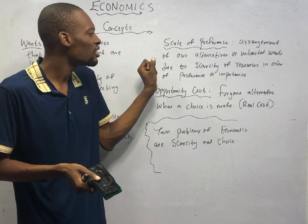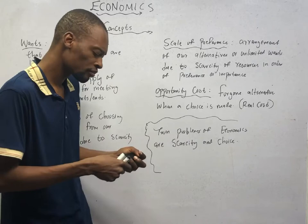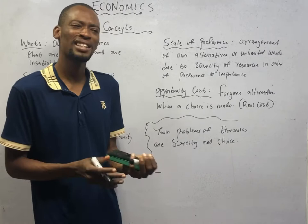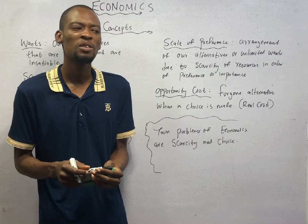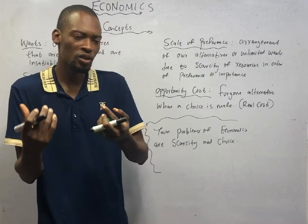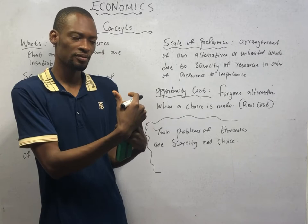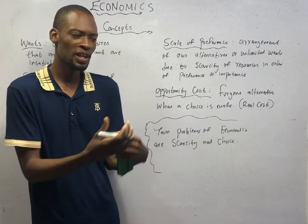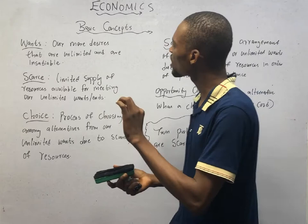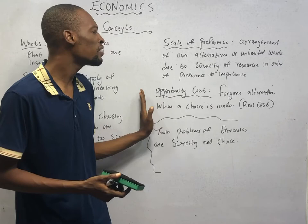Scale of preference is the arrangement of our alternatives or unlimited wants due to scarcity of resources in order of preference or importance. As a household you have to reason — this is called rationalization. You may want a car, food, a phone, or to open bank accounts, so you arrange them according to their importance: buy food first, then a phone, and so on. When you arrange them in order of importance, you are creating a scale of preference.